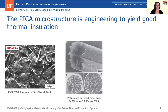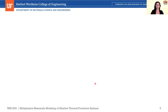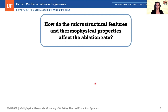We can engineer the microstructure even further and develop very efficient structures such as a woven concept that protects the microstructure even more. But we have to understand how all the processes playing at the microstructure level work in order to perform new microstructure designs. The core research question is: how do microstructure features and thermophysical properties affect the final ablation rate of the PICA thermal protection system?